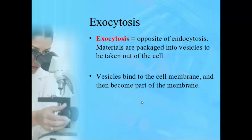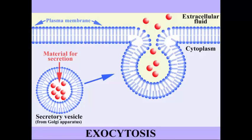The opposite of endocytosis is exocytosis — think of 'exo' for exit. This is getting material outside the cell, like waste and debris the cell doesn't need. Vesicles wrap around the material the cell wants to get rid of, bind to the cell membrane, and the material is pushed out. Taking material out of the cell takes energy — that's exocytosis.